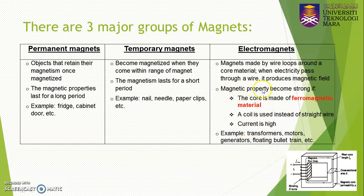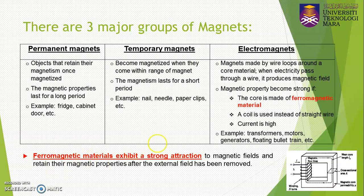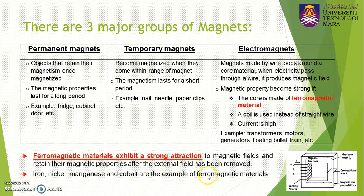The magnetic property also becomes strong if the current I is high. Ferromagnetic materials exhibit very strong attraction to magnetic fields and retain their magnetic properties even after the external field has been removed — meaning even after you remove the current, the magnetic field inside the coil remains. Iron, nickel, manganese, and cobalt are examples of ferromagnetic materials, and they are used as the core of transformers and the stator of motors.